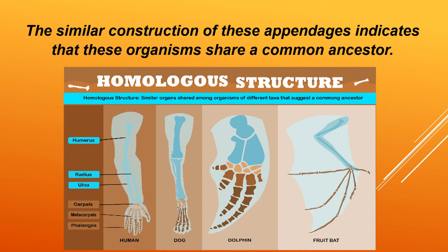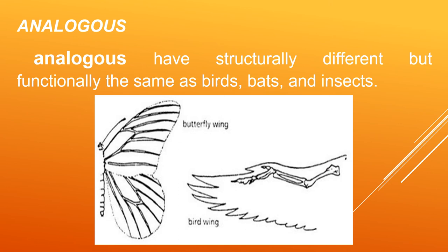Now let's move on to analogous structures. When we say analogous, structures are structurally different but functionally the same — for example, bird wings and insect wings. A bird has wings and a butterfly also has wings. Analogous structures are structurally different but functionally the same: birds can fly, bats can fly, and insects have wings.